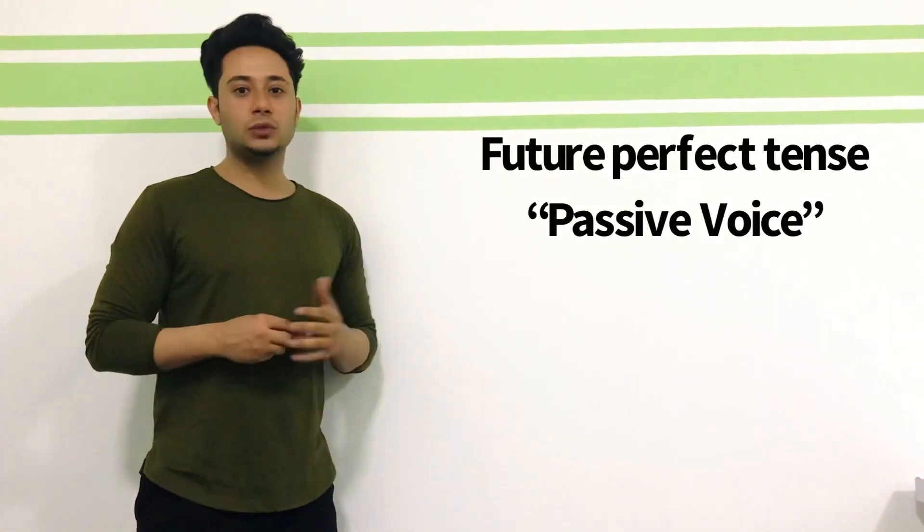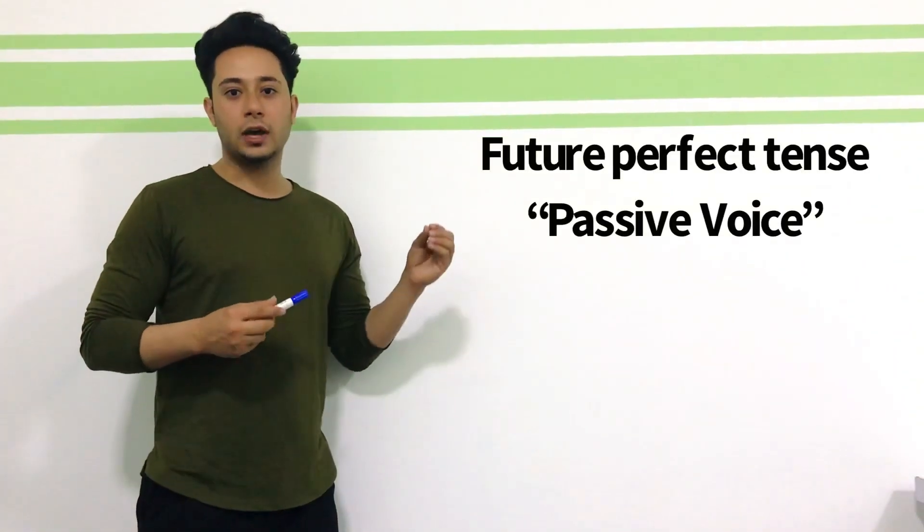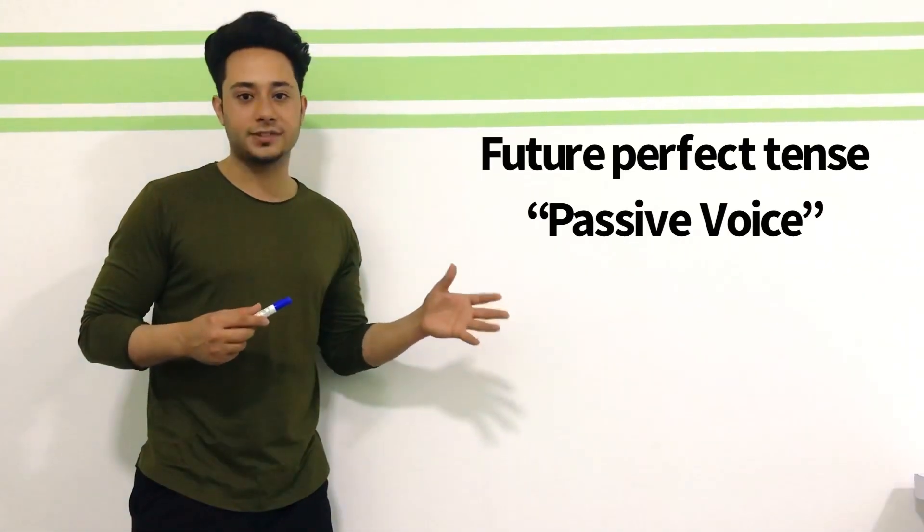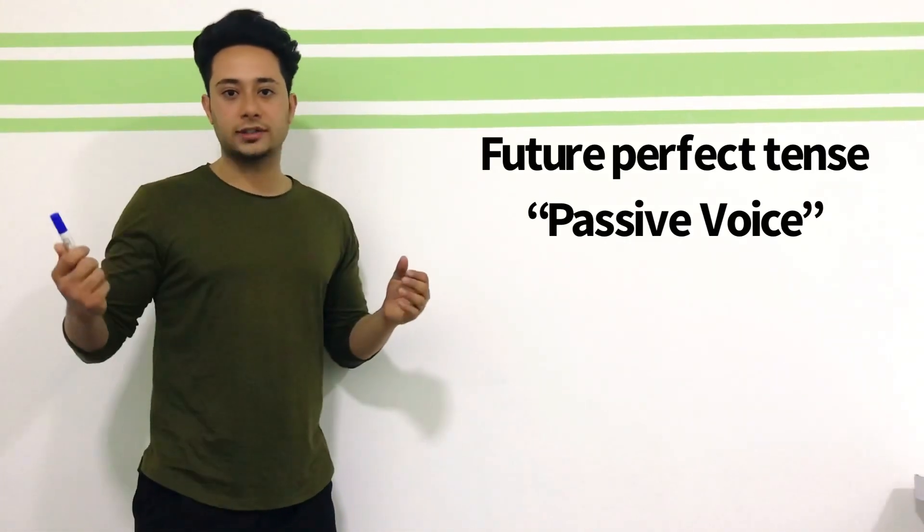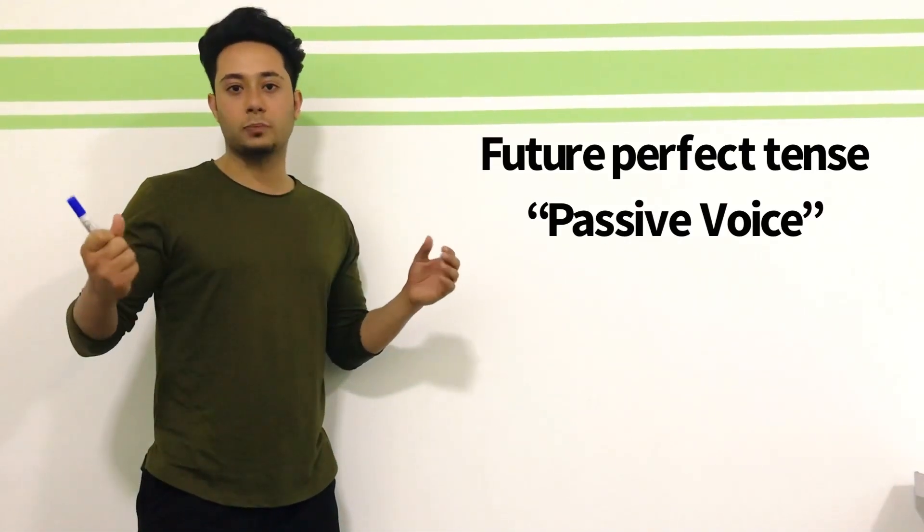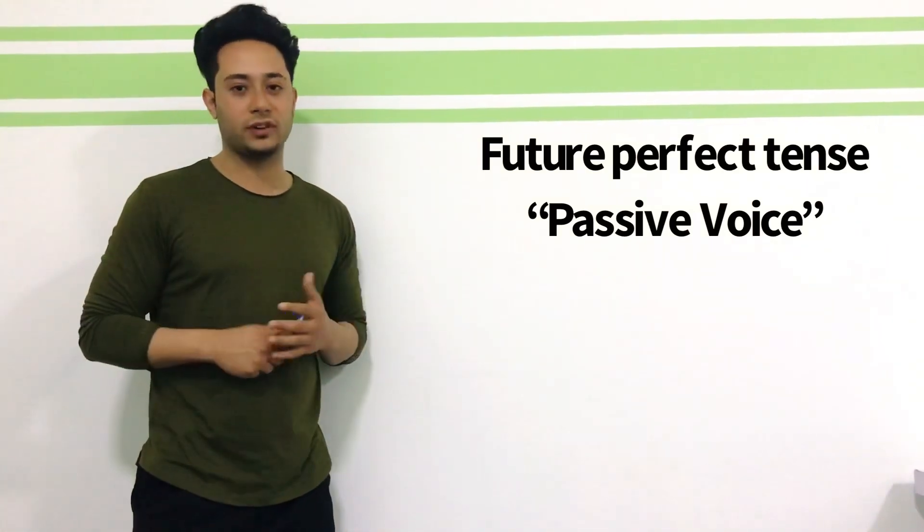Dear old friends, as you all can see today we are going to talk about the future perfect tense passive voice. It means that we already talked about the active voice of future perfect tense. Today we are going to talk about the passive voice of future perfect tense.